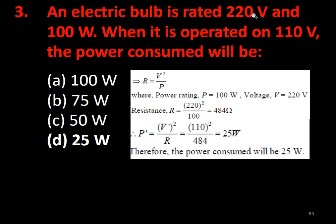Problem 3: An electric bulb is rated 220 V, 100 W. When operated at 110 V, what power does it consume? First find resistance: R = V²/P = (220)²/100 = 484 Ω. Then at 110 V: P = V²/R = (110)²/484 = 12100/484 = 25 W. Therefore the power consumed at 110 V is 25 W.